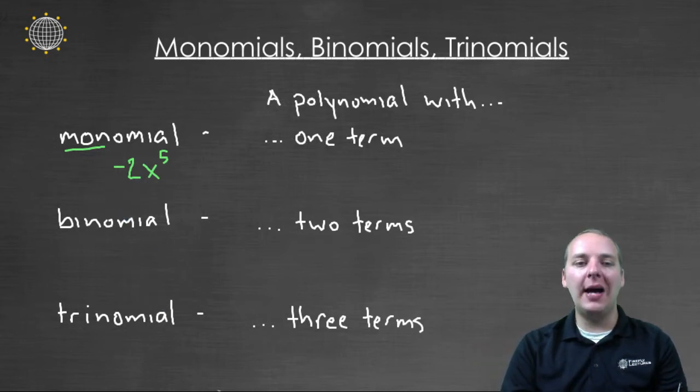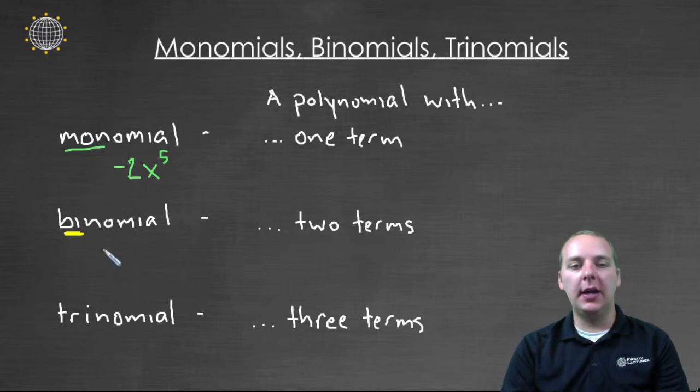We also have binomials, these are very popular. Bi, we think like bicycle has two wheels. Well, a binomial is a polynomial that has two terms. For instance, you might have x minus seven.